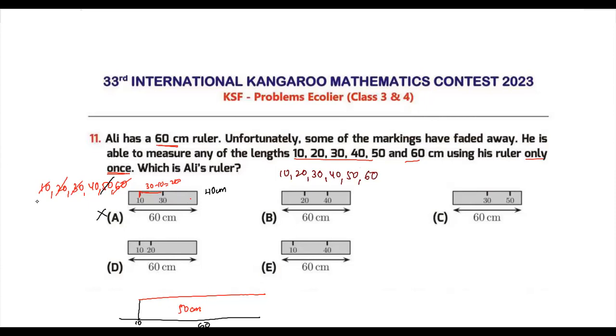Similarly, let's just write this down. Now in this case, 60 is possible, 20 is possible, 40 is possible. And 10, 30, and 50 is not possible because if you do 60 minus 20 you will get 40. You cannot do 10, 30, and 50 measurements, so this is again not Ali's ruler.